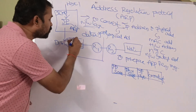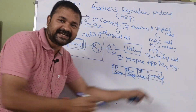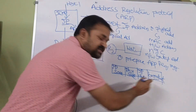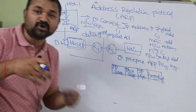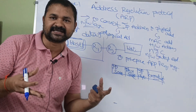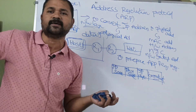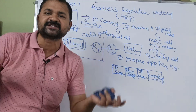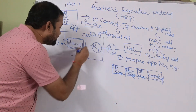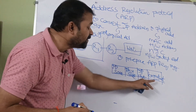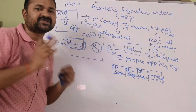Now, host 1 will broadcast the ARP request message. The broadcast address means the message will be transmitted to all machines on the corresponding network. So host 1 transmits the ARP request message to all machines on the network — it may be routers or hosts. This message will be transmitted to R1, R2, as well as host 2.